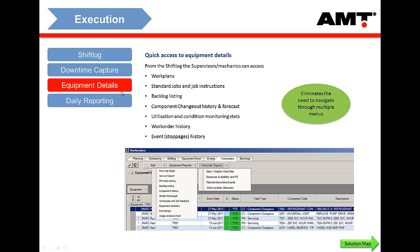The shift log also gives quick access to equipment details. It's not practical or intuitive for service supervisors and foremen to be navigating through AMT to find equipment reference information, so we've brought that all onto the same front screen. They can quickly view equipment reports and planning reports — component status, equipment statistics, latest condition monitoring data, or utilization information — all available from the same menu without navigating through different areas of AMT.